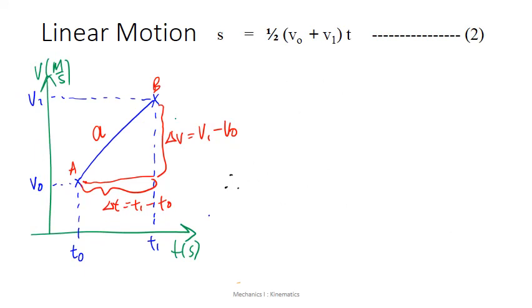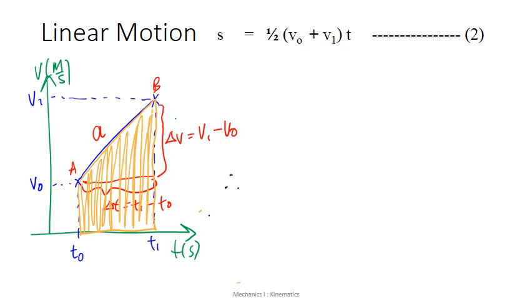So let's now derive equation 2 using the same VT graph. The area under the graph, as where I'm shading right now, refers to the displacement. And in fact, this is a trapezium. An area of a trapezium is given by the simple formula: half times the sum of parallel sides times the height.